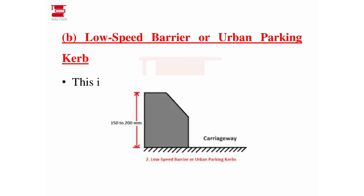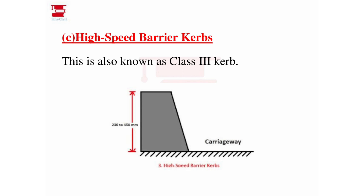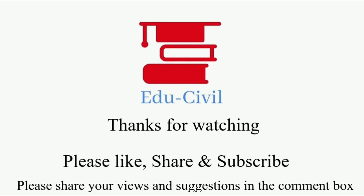Class 3 is the high-speed barrier curb. The height for Class 3 is 230 to 450mm. There is also a submerged type, but that is not as important. Summary: Class 1 = 70–80mm, Class 2 = 150–200mm, Class 3 = 230–450mm. Please like, share, subscribe, and press the bell icon for notifications.